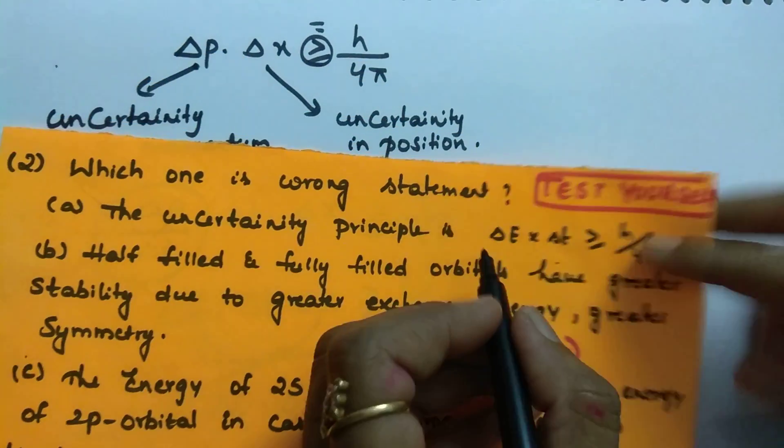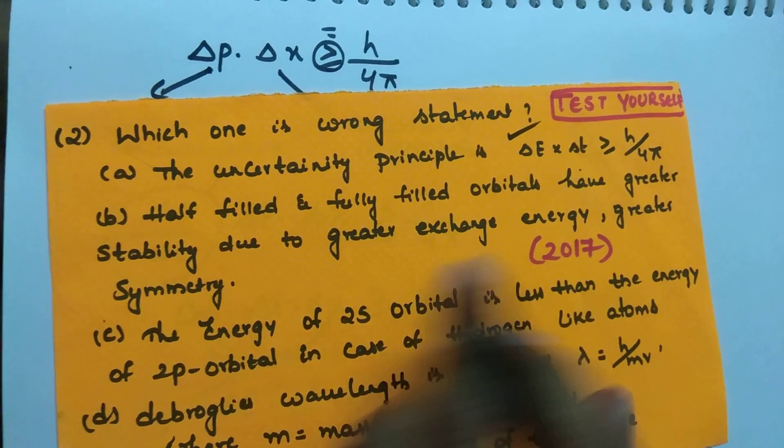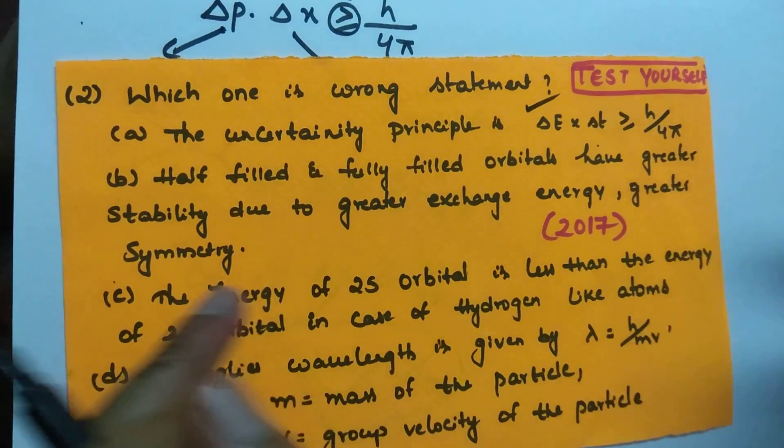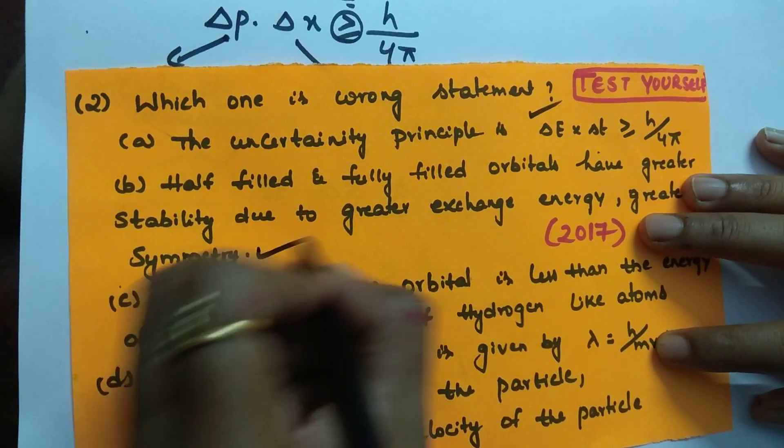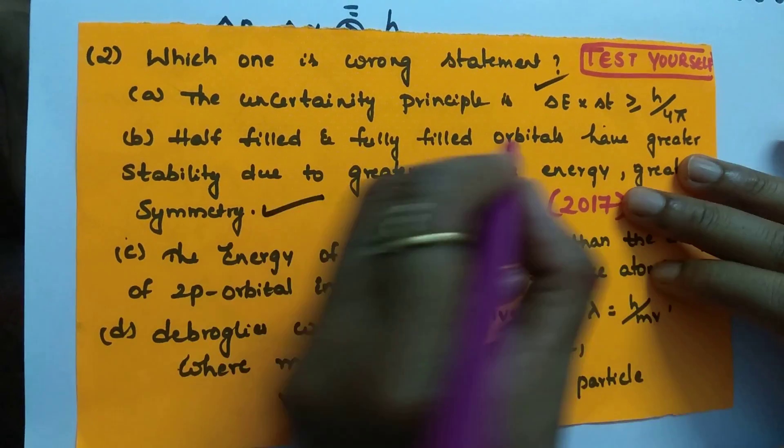So, delta E into delta T is greater than or equal to H by 4 pi. So, this formula is also correct. And, half filled and fully filled orbitals have greater stability due to greater exchange energy and greater symmetry. So, this option is also correct. Half filled and full filled are more stable. Yes or no? Right.